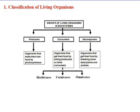Decomposers are organisms that get their food by breaking down dead plants and animals. We have three kinds of consumers: herbivores, carnivores, and omnivores, and we're going to study each type in detail throughout the lesson.